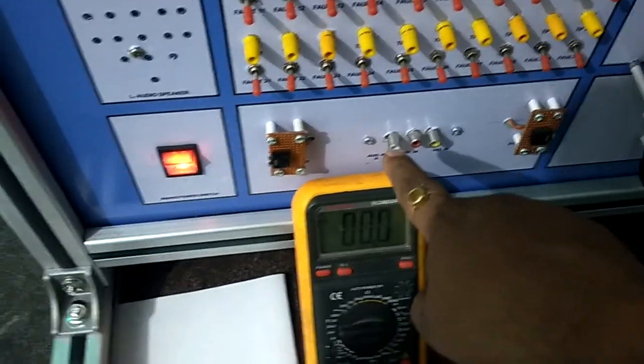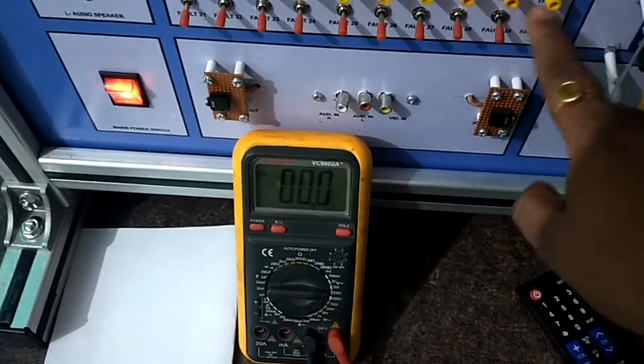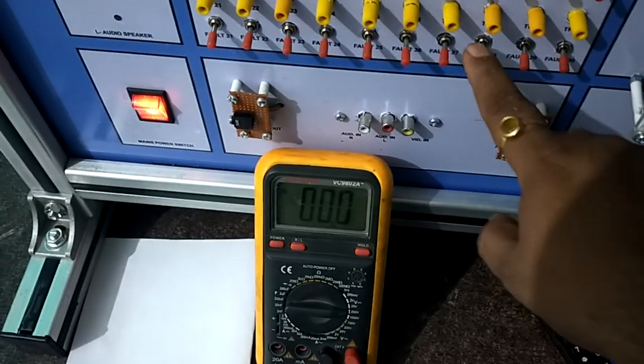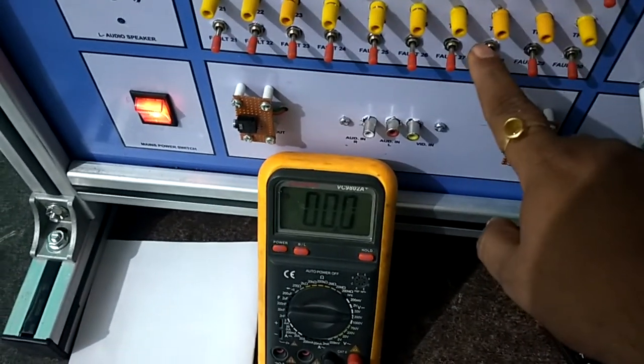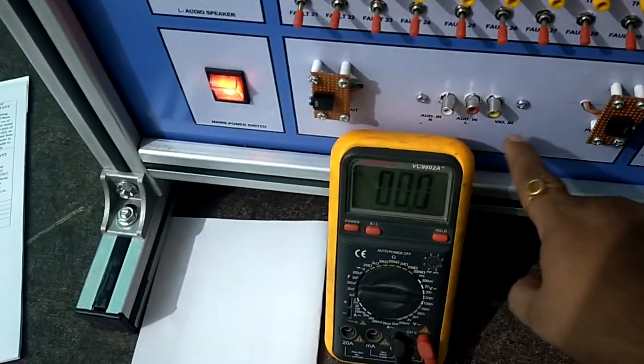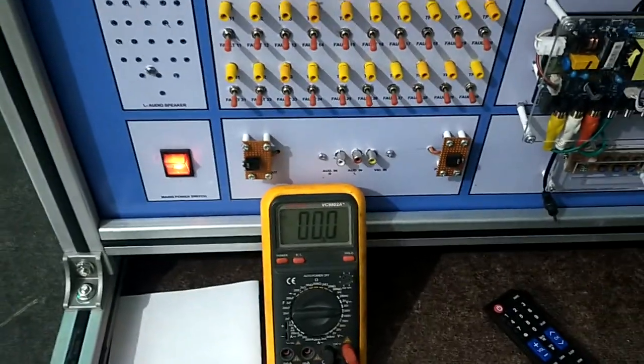Now if you are using this AV port, these are switches for this AV port. So they can be checked correspondingly while the DVD player or your DTH is connected to these ports. So this is all about the faults in TV trainer. Thank you.